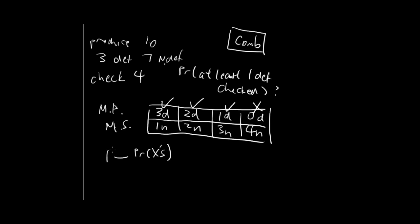So instead of total number, we do one because one is the total probability and we minus the probability of the cross, which is the same thing as one minus the probability of zero defective or four non-defective.